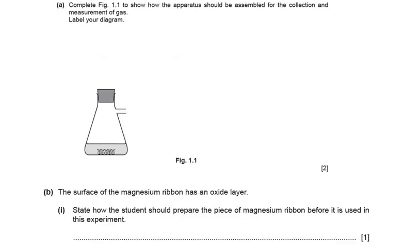Part of the question says: complete Figure 1.1 to show how the apparatus should be assembled for the collection and measurement of the gas, and label your diagram. As we are collecting hydrogen gas, we need to be careful that it is explosive, so we can't collect it in a gas syringe. It is preferable that we collect it over water.